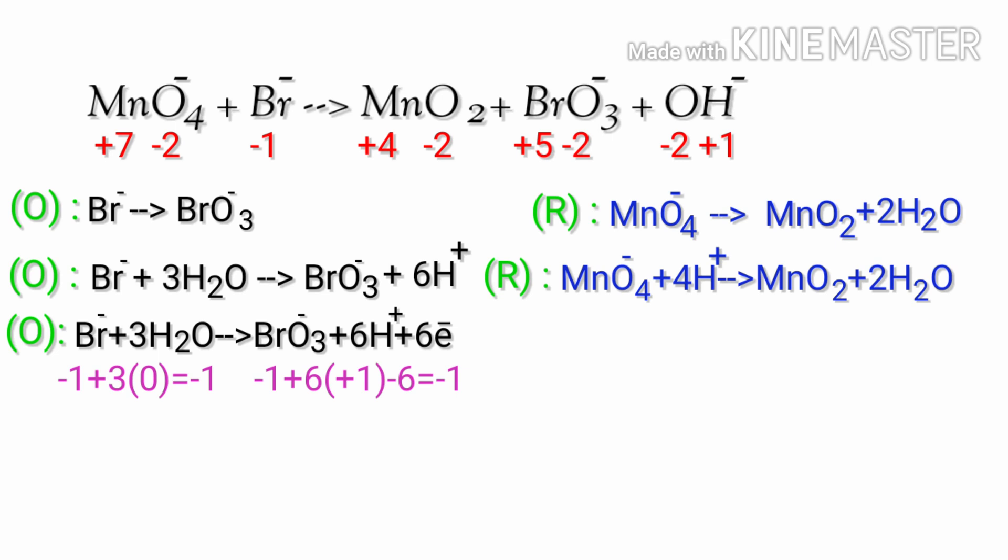Make electron gain equivalent to the electron lost. The electrons gained in the oxidation half reaction must be equal to the electrons lost in the reduction half reaction. Now you can equal the charge in the reduction half reaction. To do this, you can add electrons. Now you can add 3 electrons to left side.